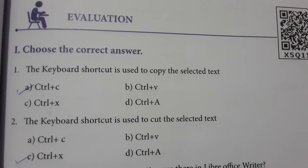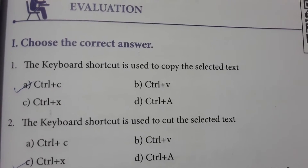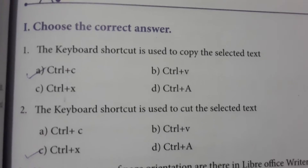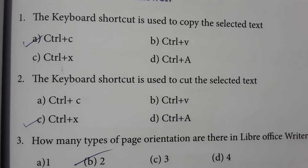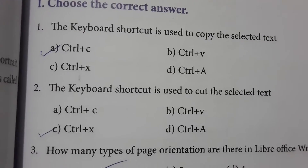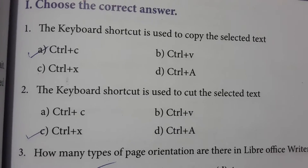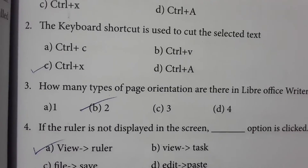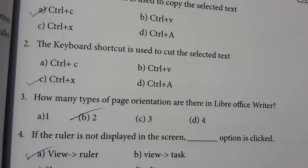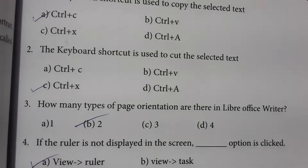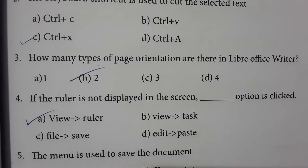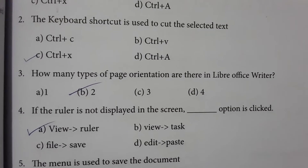The keyboard shortcut used to copy selected text is Control+C, and the keyboard shortcut used to cut selected text is Control+X. How many types of page orientations are there in LibreOffice Writer? LibreOffice Writer has two types of page orientation: Portrait and Landscape. So option B is the correct answer.